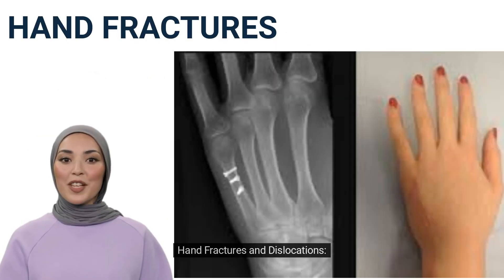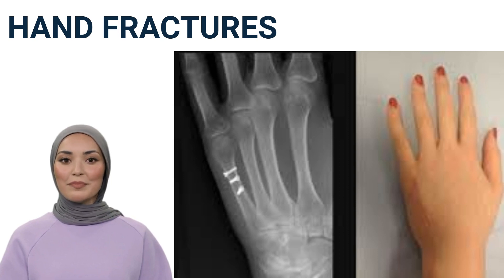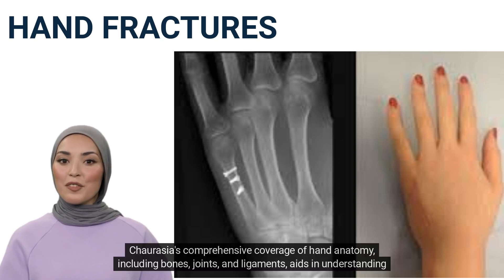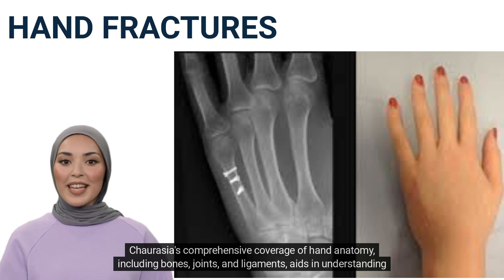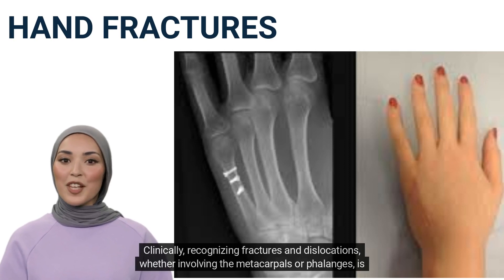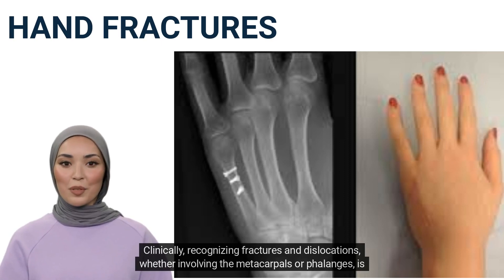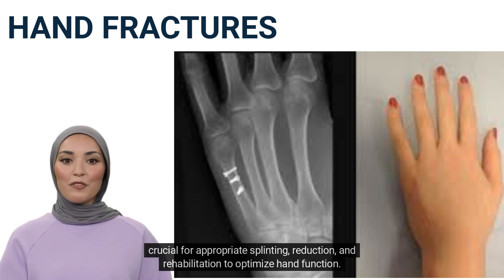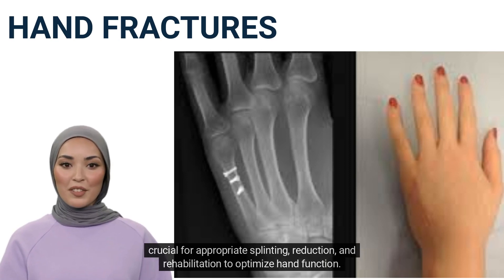Hand Fractures and Dislocations: Chaurasia's comprehensive coverage of hand anatomy, including bones, joints, and ligaments, aids in understanding the complexities of hand injuries. Clinically, recognizing fractures and dislocations, whether involving the metacarpals or phalanges, is crucial for appropriate splinting, reduction, and rehabilitation to optimize hand function.